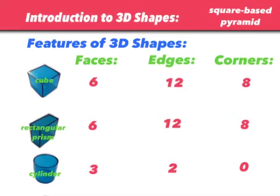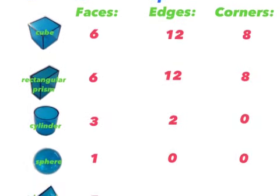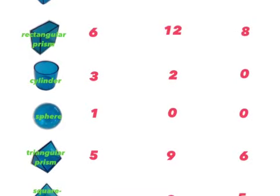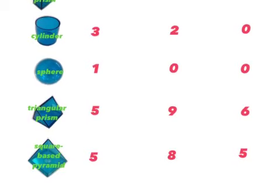Looking at our comparison chart, we'll scroll down. We've seen some of these shapes before — there's our triangular prism, and now our square-based pyramid. We've got five faces, eight edges, and five corners in a square-based pyramid. Nice job!